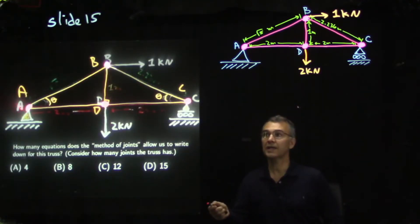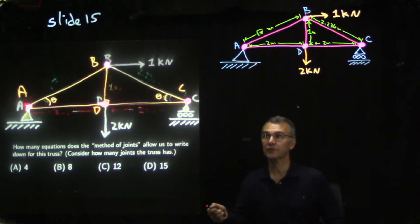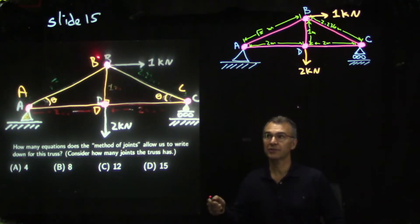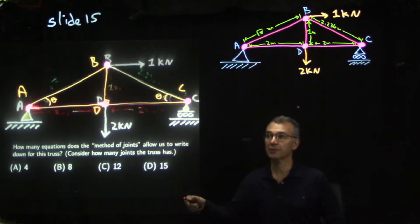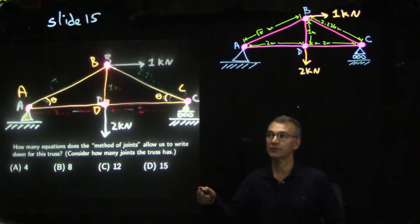Points A, B, C, and D — emphasized in magenta — are joints. So this truss has four joints. The large dots in magenta are joints, and the line segments in orange are bars or members. We have five bars and four joints.